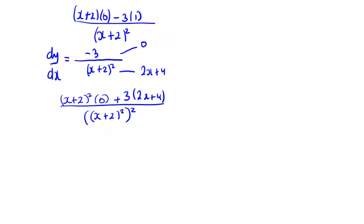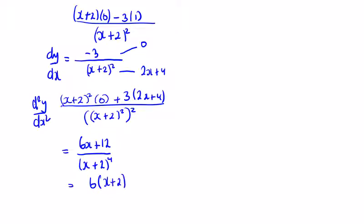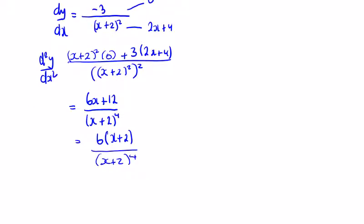So you can simplify this down — we're going to have 6x plus 12 on top, and on the bottom x plus 2 to the power of 4. Now it looks like there's an x plus 2 on top as well. So d squared y dx squared is going to be equal to 6 by x plus 2 on top, and x plus 2 to the power of 4 on the bottom. One of those x plus 2s will cancel with the top, so we're just left with 6 over x plus 2 to be cubed.